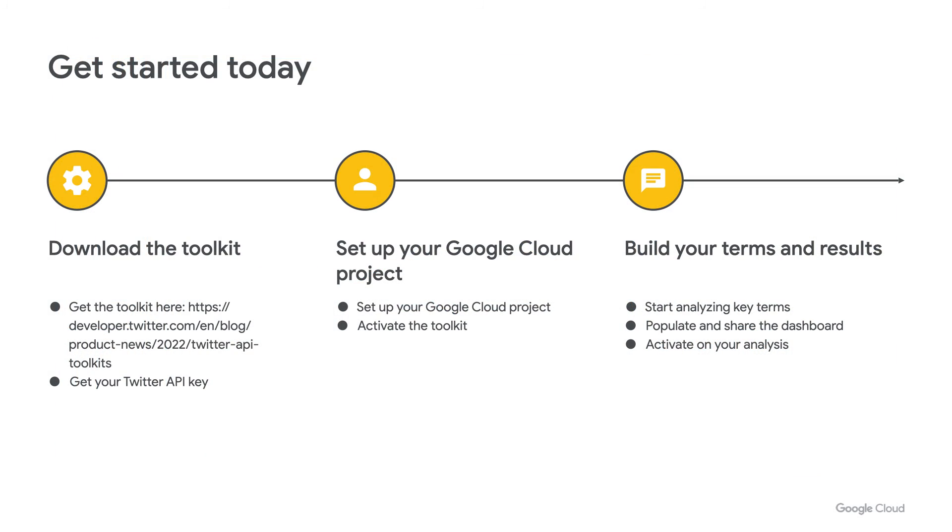It's as easy as these three steps to get started. First, download the toolkit from GitHub. Next, set up your Google Cloud project. And last, deploy the toolkit to your project. Once you've done that, you can start doing all of this different slicing and dicing and understanding how Twitter can really work best with your organization. I'd like to thank Prasanna for his time today, and for everyone listening in, thank you again for your participation and enjoy the upcoming sessions here at Google Cloud Next 2022. Thanks again and have a great day.